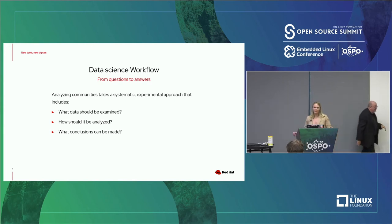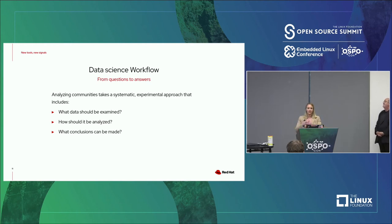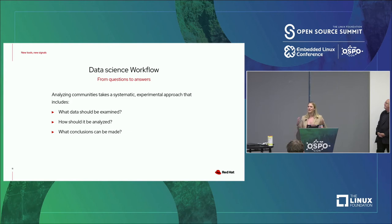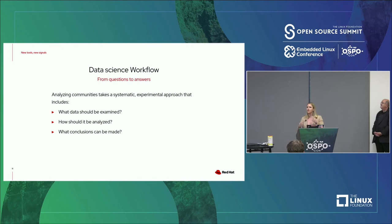I want to talk about how the data science workflow goes into how we can start making more informed decisions. When we're looking at analyzing communities, it takes a more experimental approach. This is a space that really hasn't been dived too far into, so you have to figure out where your boundaries are and what types of questions you want answered. It always starts with: what is the type of data you want to examine, where are the different pain points, and how should it be analyzed?